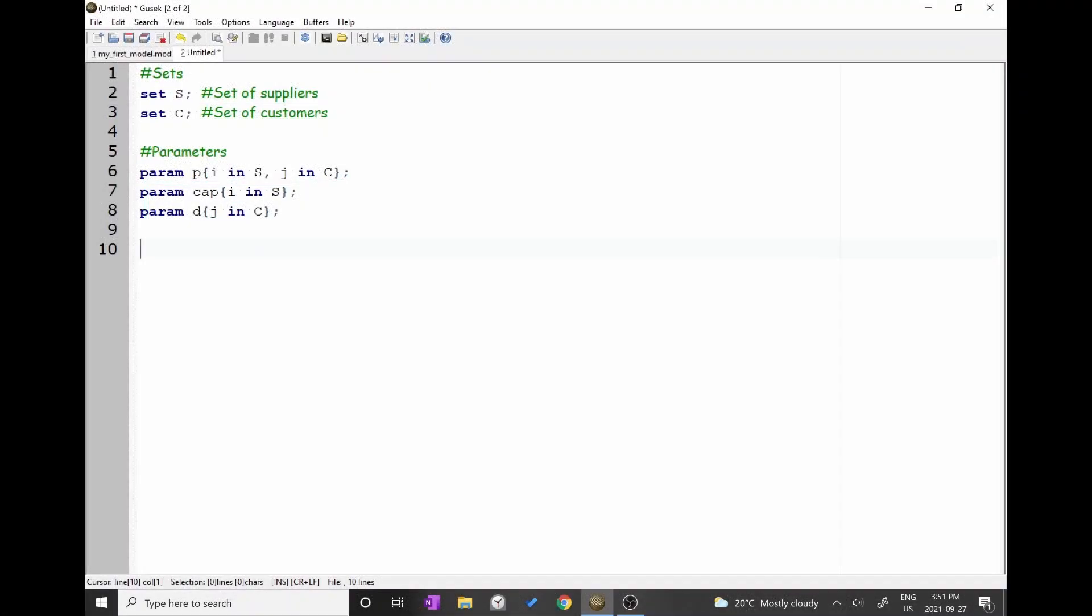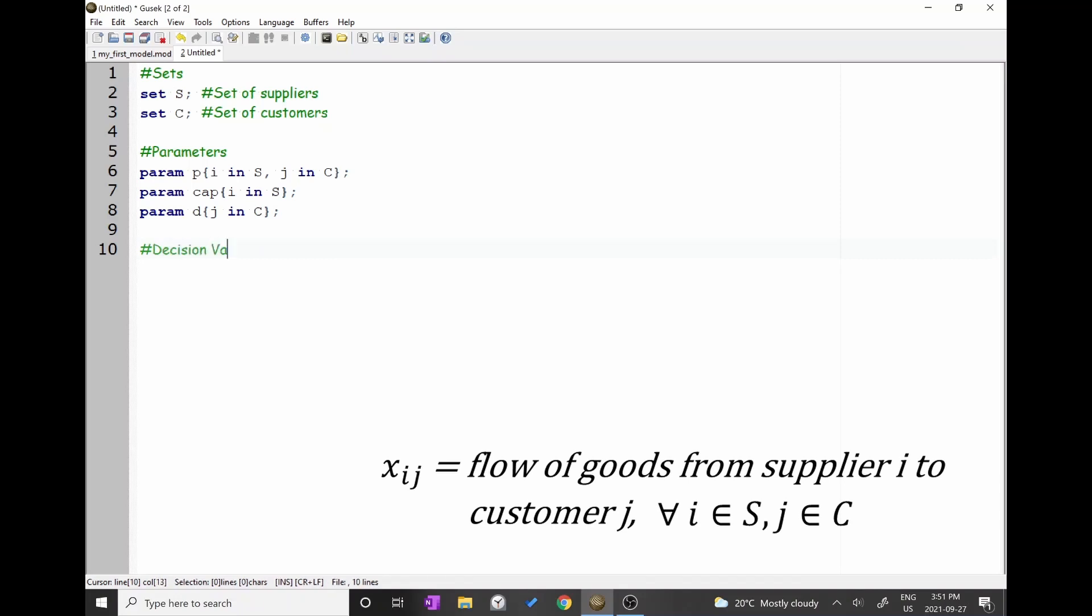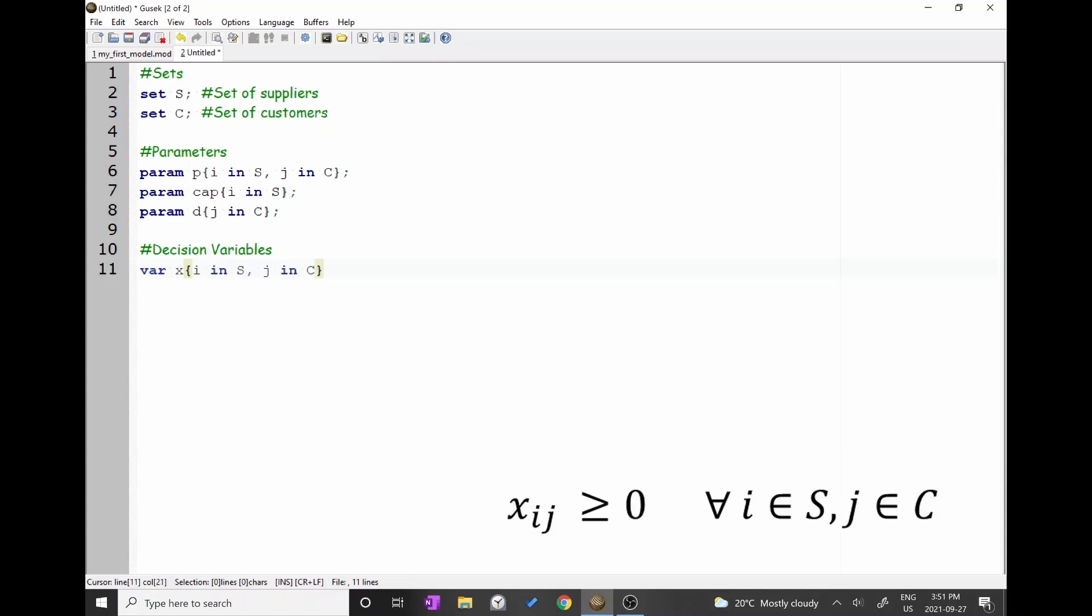We only have variable x index i, j in the problem. So type var x, then we need to inform Gusek that variable x has two indexes. Open keys and type i in s, j in c, close the keys, add a comma, and indicate the non-negativity constraints. Type greater than or equal zero and close with a semicolon.